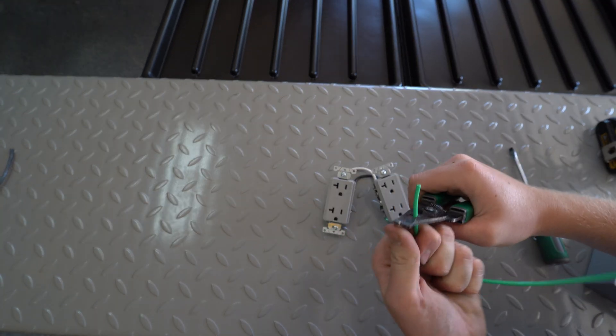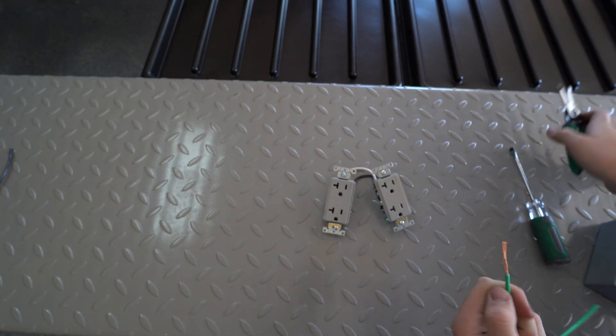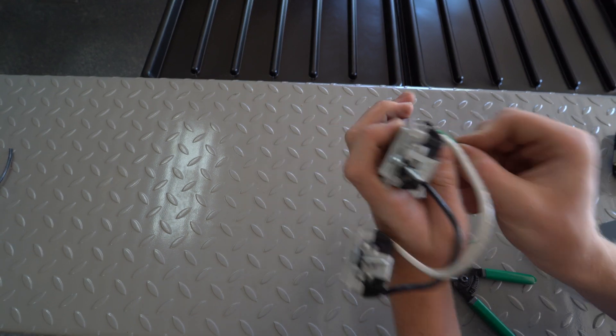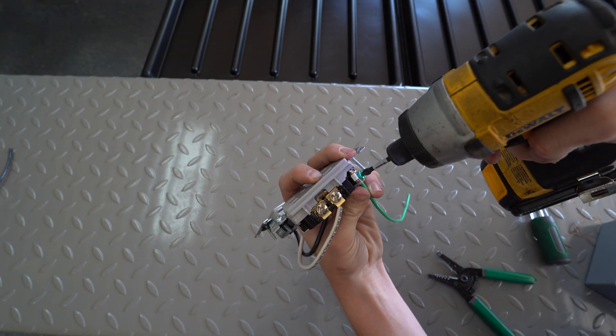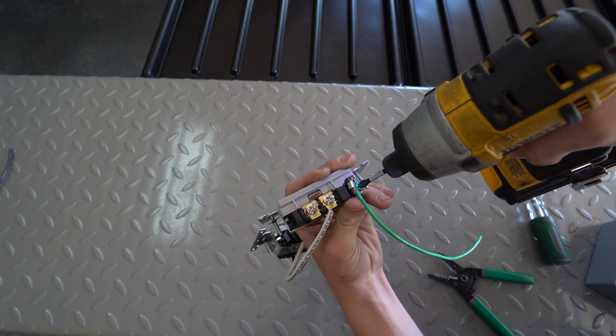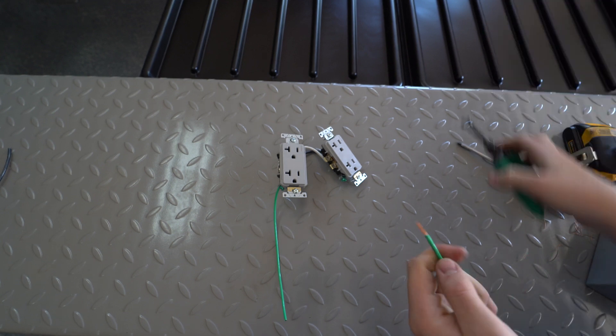Strip a short length of ground wire. Insert the ground wire into the green screw and tighten it. Repeat that with the other outlet.